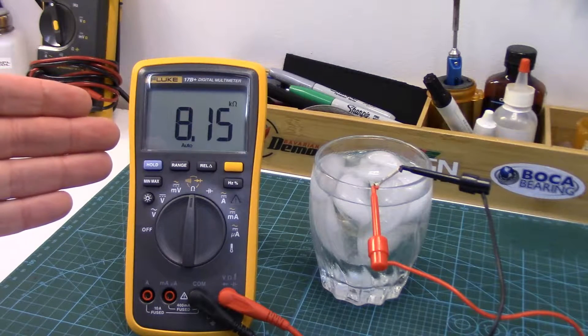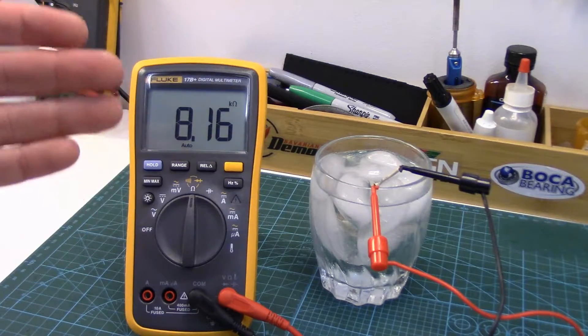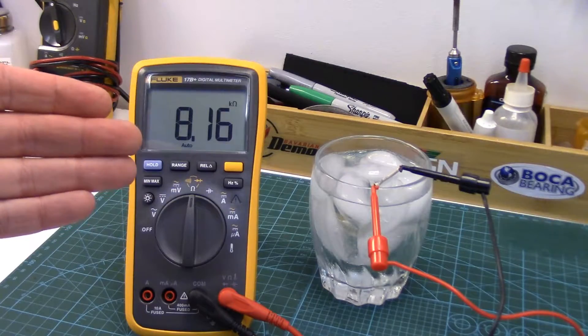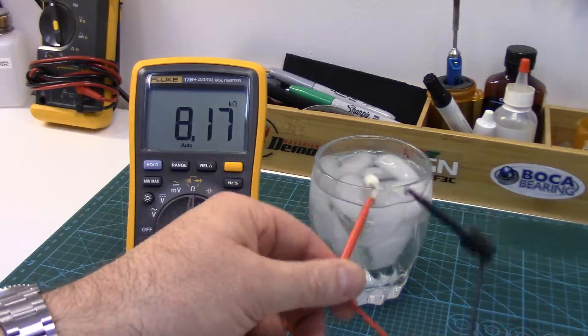So it's no wonder that the evaporator had frozen up. The fridge thought it was way warmer than it was, so it just kept running and running and running trying to cool down. So we know this sensor is shot.